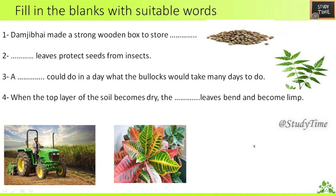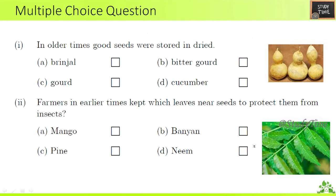Fill in the blanks: First — Damjibai made a strong wooden box to store seeds. Second — dash leaves protect seeds from insects. Third — a dash could do in a day what the bullocks would take many days to do — a tractor. Fourth — when the top layer of the soil becomes dry, the croton leaves bend and become limp.